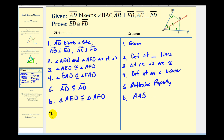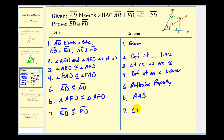Since these two triangles are congruent, their corresponding parts must also be congruent. So segment ED is congruent to segment FD. The reason here is that corresponding parts of congruent triangles are congruent. And this is exactly what we were trying to prove.